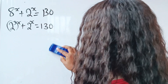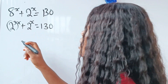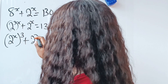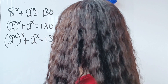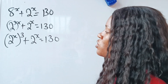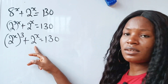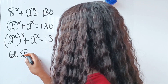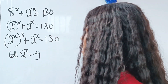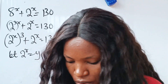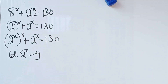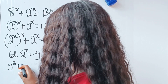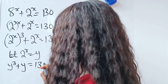So that means we can do that here. We can write this as 2 to the power of x raised to the power of 3, plus 2 to the power of x, is equal to 130. Now we have the same thing appearing twice, so we can simplify the equation by letting 2 to the power of x equal y. So we can write that y to the power of 3 plus y is equal to 130.